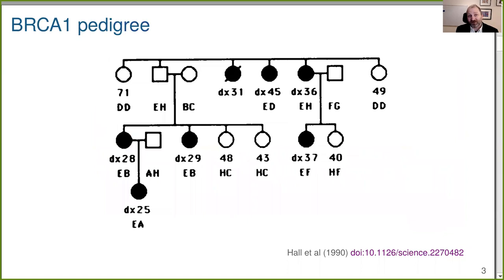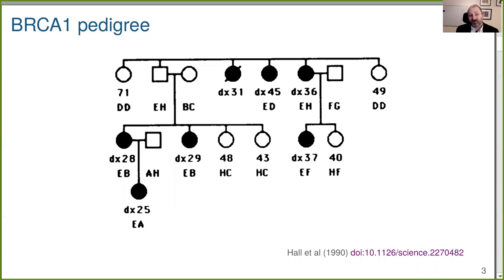Back in the day, we used large families to find genes. This is one of the families used to find the BRCA1 gene for breast cancer. A key insight in that study was to focus on early-onset breast cancer. The black circles here are affected women, and below each is the age of diagnosis.